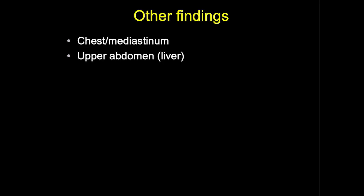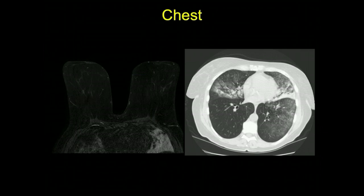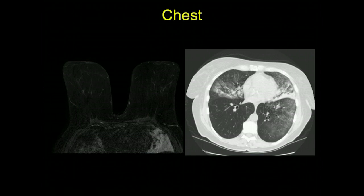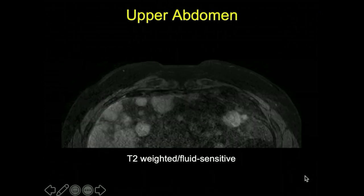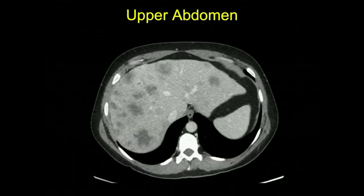Given the larger field of view, it is important to evaluate extramammary findings in the chest, mediastinum, and upper abdomen — particularly the liver. On one breast MRI, left lingular consolidation and right middle lobe involvement were noted on the fluid-sensitive sequence; a subsequent chest CT confirmed bilateral peripheral ground-glass opacities with septal thickening, found to be pulmonary alveolar proteinosis. In another patient with known breast cancer, multiple T2-bright liver masses were found, and CT confirmed multiple hepatic metastases.